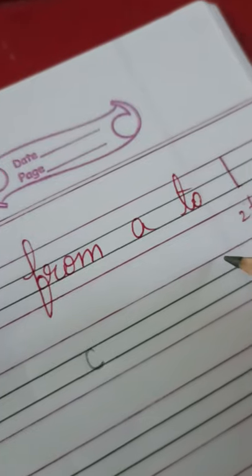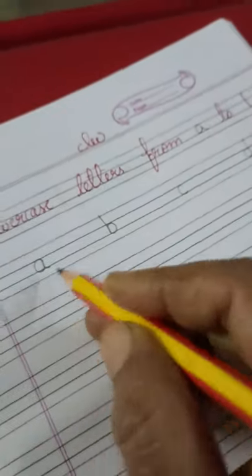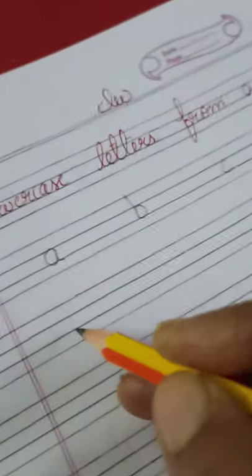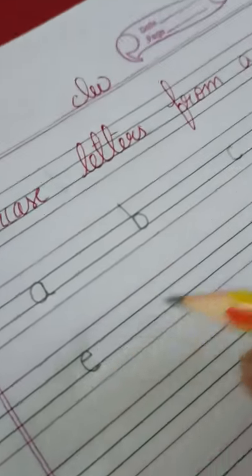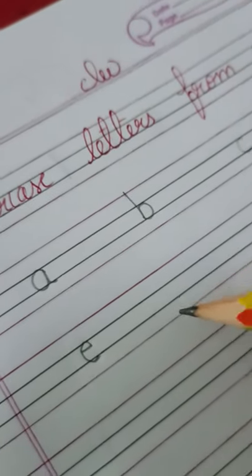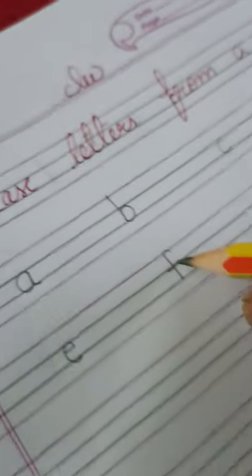Now, after B, take two finger space and write letter C, okay? Now, after C, which letter we have to write? Yes, letter D. Take finger space and write letter D, okay? Now, go to next line A, B, C, D. D after E, yes? E after F. Take finger space and write, children.